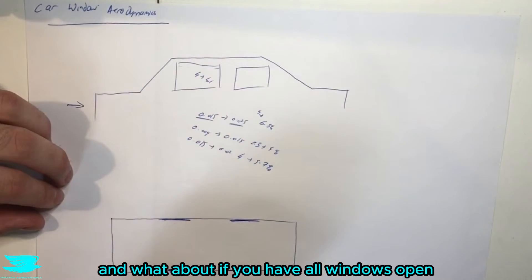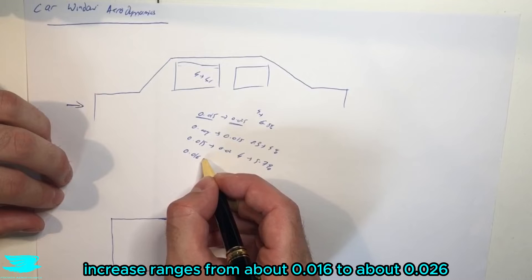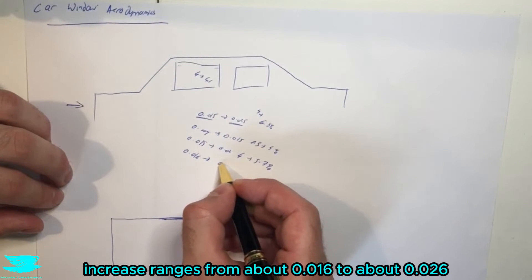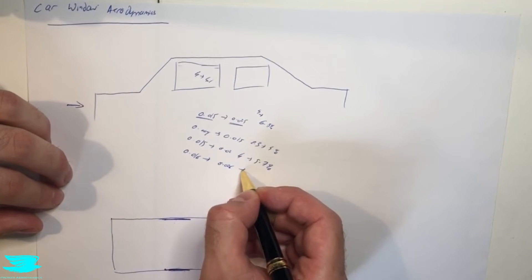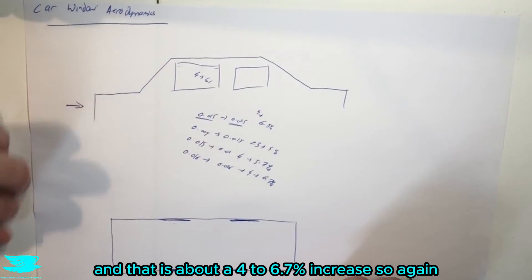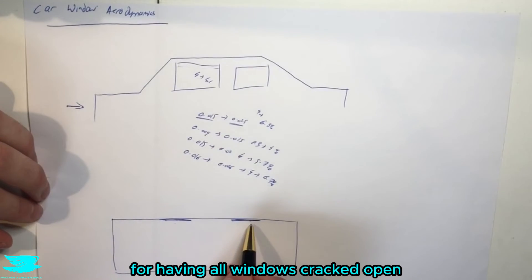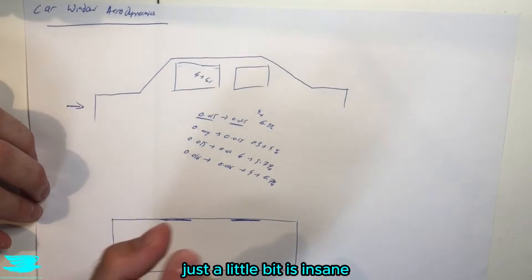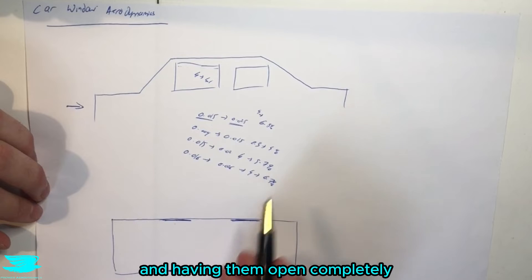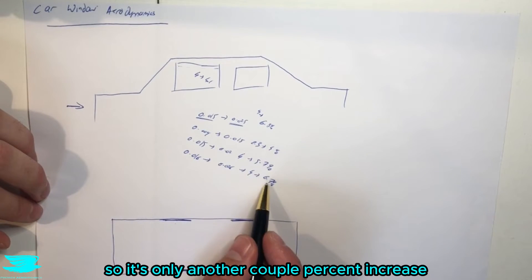And what about if you have all windows open? Well, surprisingly, the drag coefficient increase ranges from about 0.016 to about 0.026, and that is about a 4 to 6.7% increase. So again, having a 16 count increase for having all windows cracked open just a little bit is insane, and having them open completely, you only get another 10 count increase, so it's only another couple percent increase.